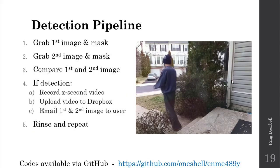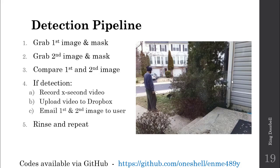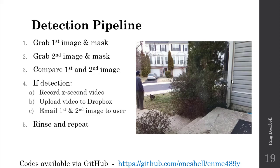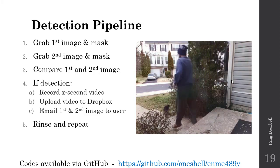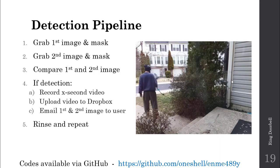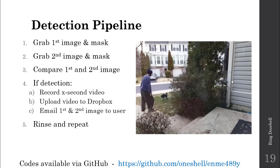Let's talk about the detection pipeline. We're going to grab a first image and then a second image, mask both of those images, and then compare them. If a detection is made — if some threshold is achieved — we kick off and record an X-second video, using 30 seconds in this example. Then we'll upload the video to Dropbox, email the images to the user, send a text message via Twilio, and then rinse and repeat — 24 hours a day, seven days a week — so we can record anytime someone or something enters that user-defined area.